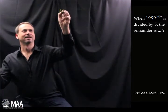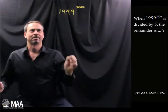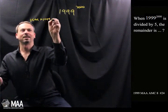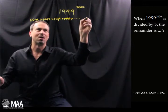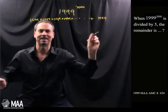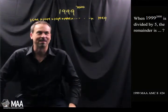Alright, 1999 to the 2,000th power. What is that? That's 1999 times 1999 times 1999 and I'm going to be here for an awfully long while because I'm going to do a product of 2,000 of these things. Well there's no way I'm going to work out that product and then divide it by 5. That's just too much work.